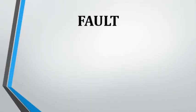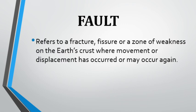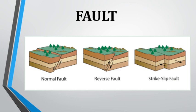What is a fault and how is it related to an earthquake? We will not be discussing geology in depth as it was covered last semester in Earth Science, but for review: a fault refers to a fracture, fissure, or zone of weakness on the Earth's crust where movement or displacement has occurred or may occur again. Faults have three types. As shown in the images, we have the normal fault, reverse fault, and the strike-slip fault. This shows that earthquakes do not just happen by plates moving sideways — it could also be upwards or downwards.